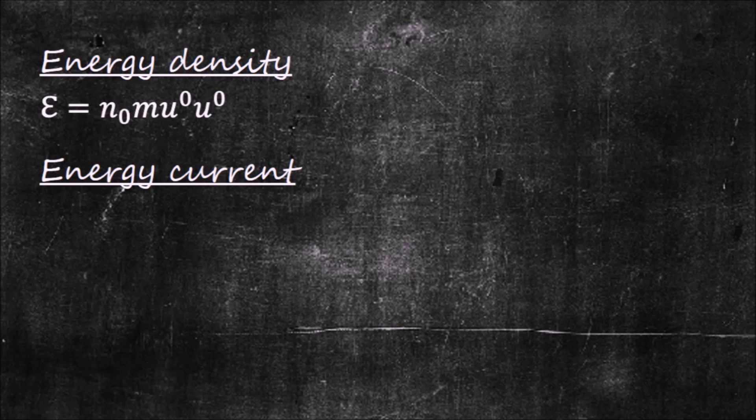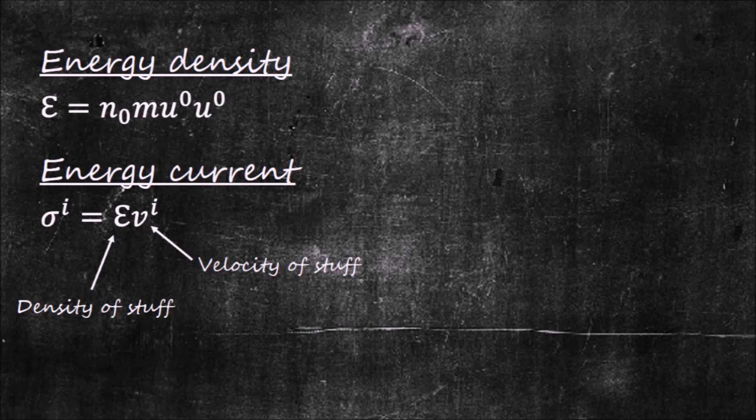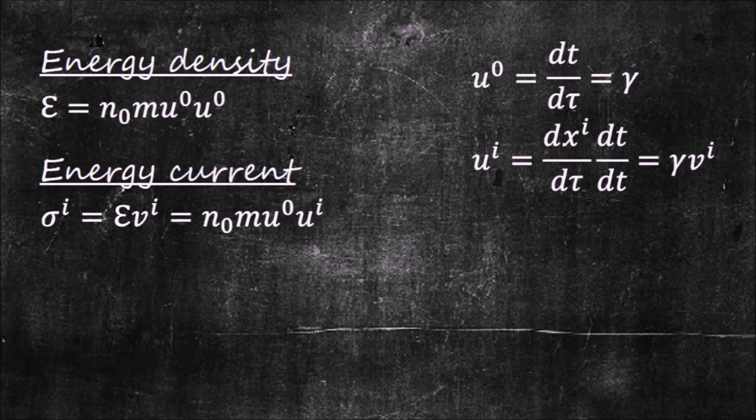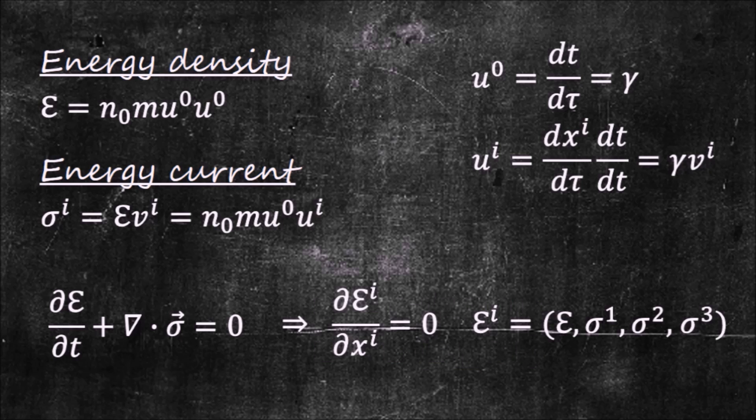We can also define energy current. This would be the rate at which the energy flows in and out of a region of space. Recall the definition of current. It is the amount of stuff, whatever it is, that flows across some surface per unit time, and is given by the density of the stuff multiplied by the velocity of the stuff. So, the energy current in the ith direction can be written in terms of the four-vector U. We must insist that energy and mass can be neither destroyed nor created. If the amount of energy in a given volume decreases, that means it must have leaked out through the surface enclosing that volume. This statement can be expressed by the well-known equation of continuity, where the time and space derivatives act on n_0 and U, which are now fields. Since time and space are on the same footing in relativity, we can write this expression as a four-dimensional divergence.